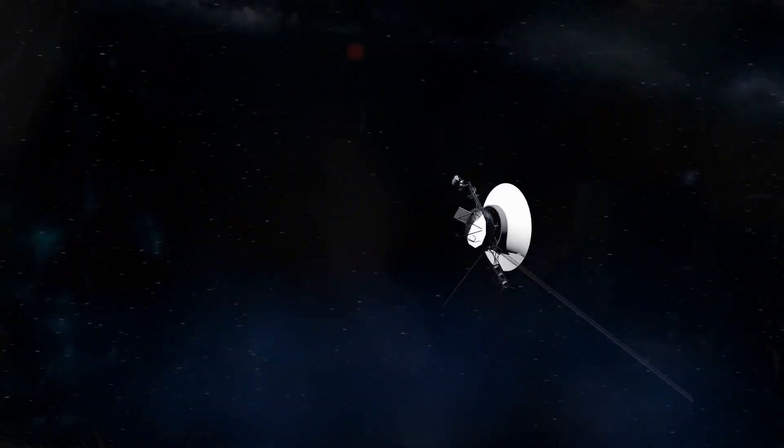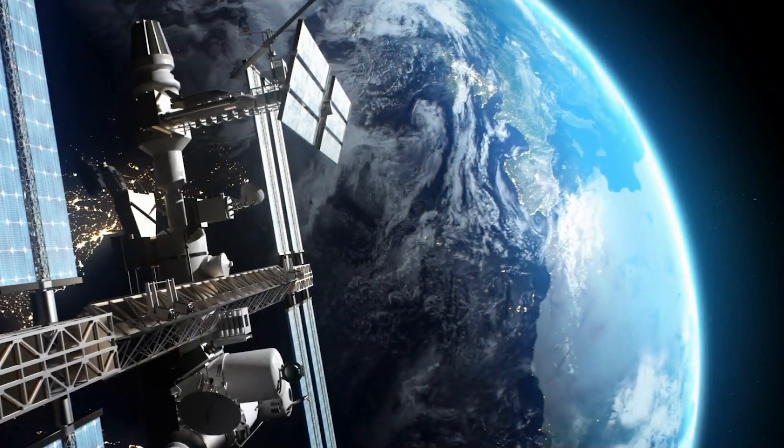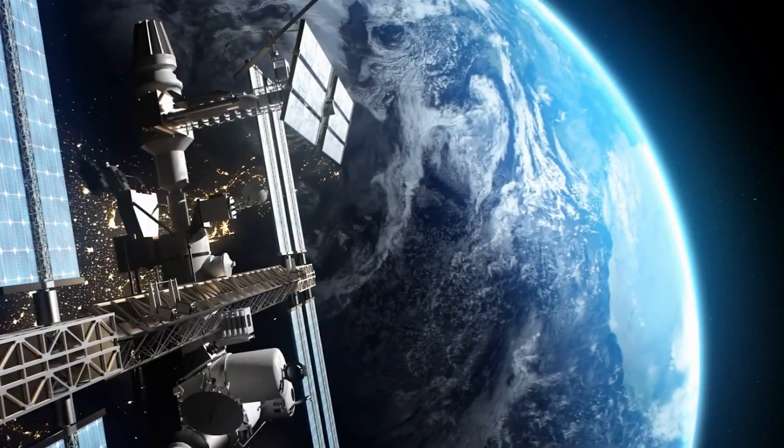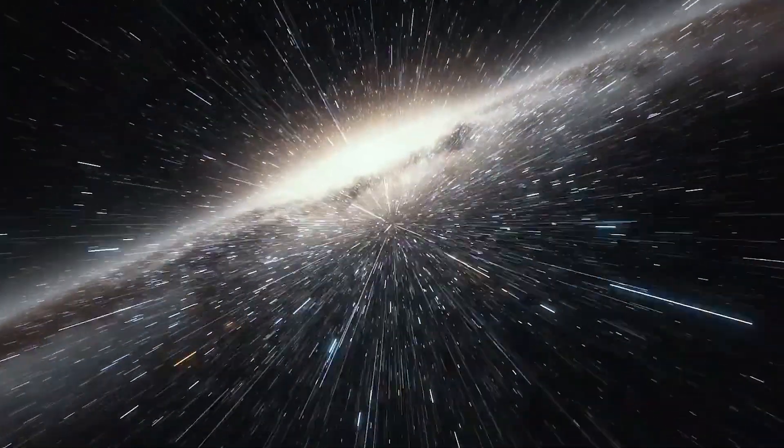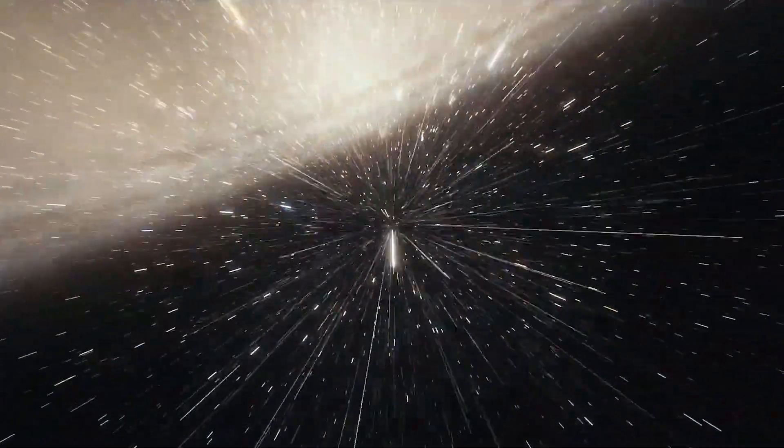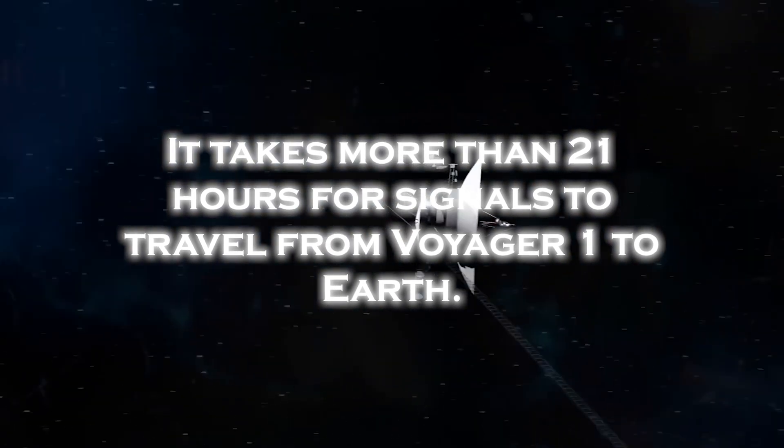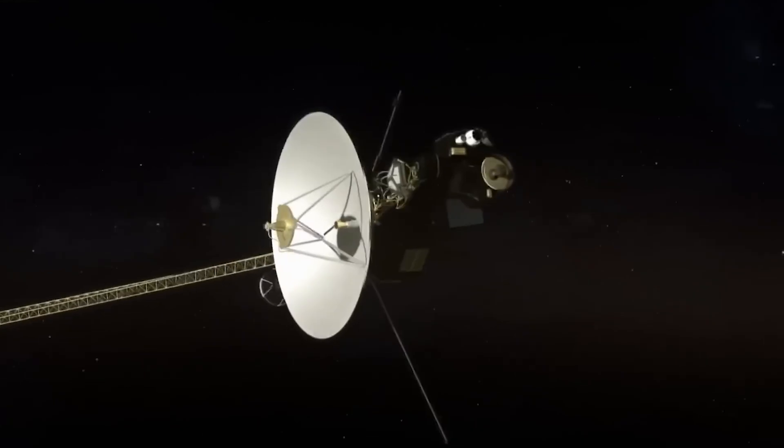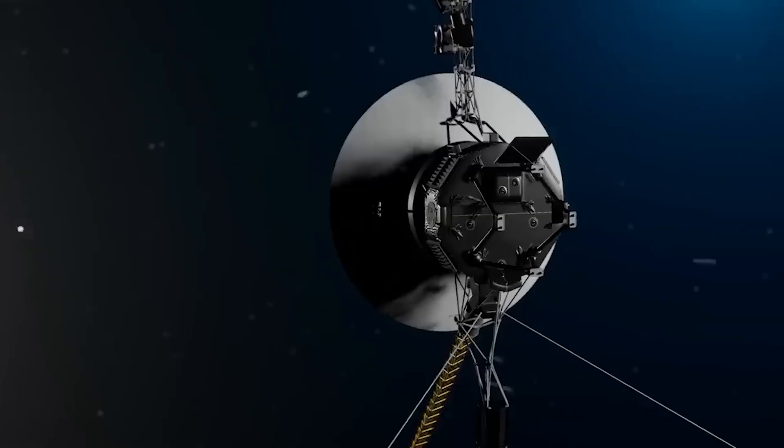Even in its current state, it is still very valuable to us. However, the great distance between Voyager 1 and Earth presents a significant challenge to maintaining effective communication. As the spacecraft ventures into interstellar space, Voyager 1's signal strength has weakened. It takes more than 21 hours for signals to travel from Voyager to Earth. The weak signal, combined with interference from background noise, makes it difficult to transmit and receive data.